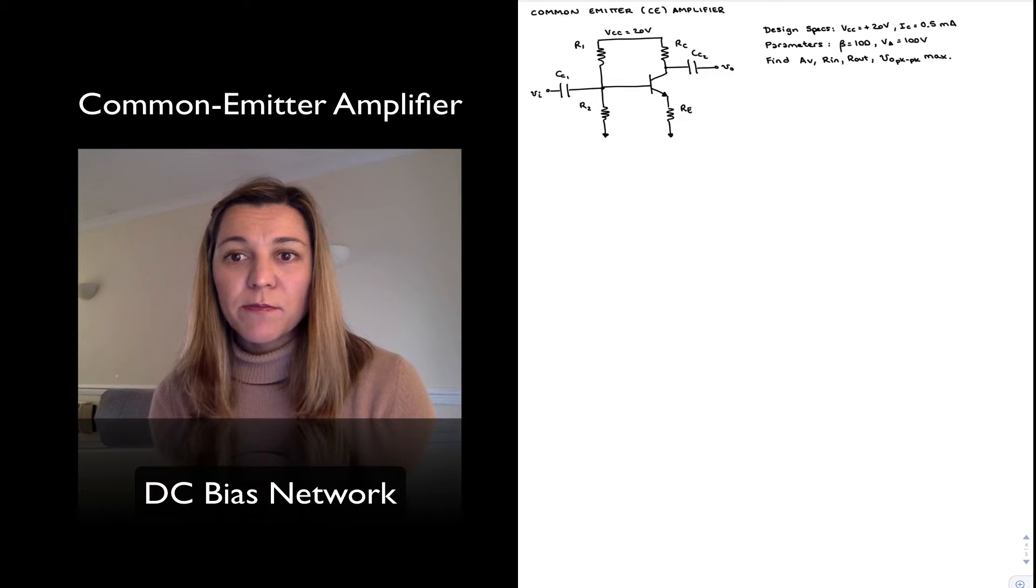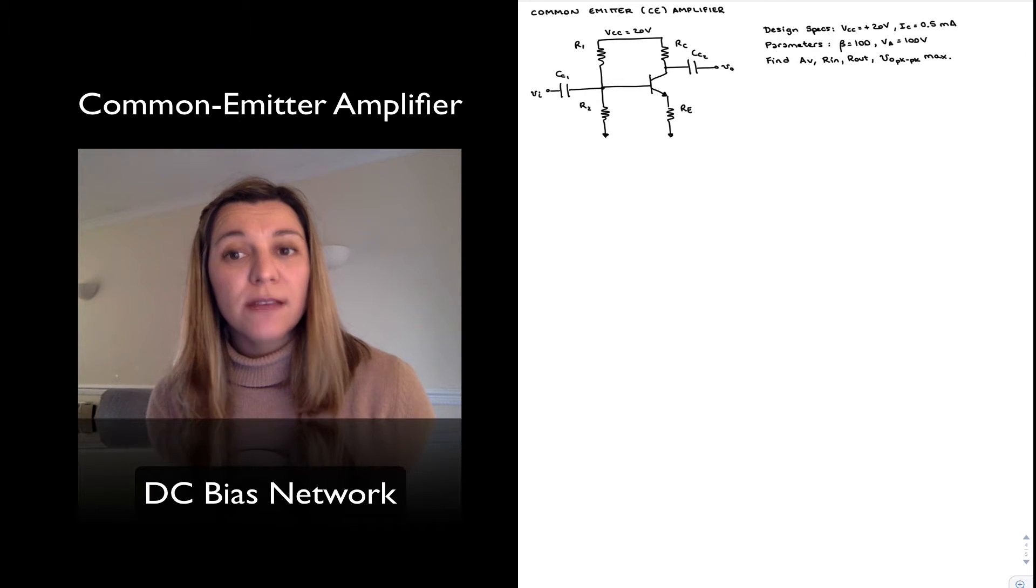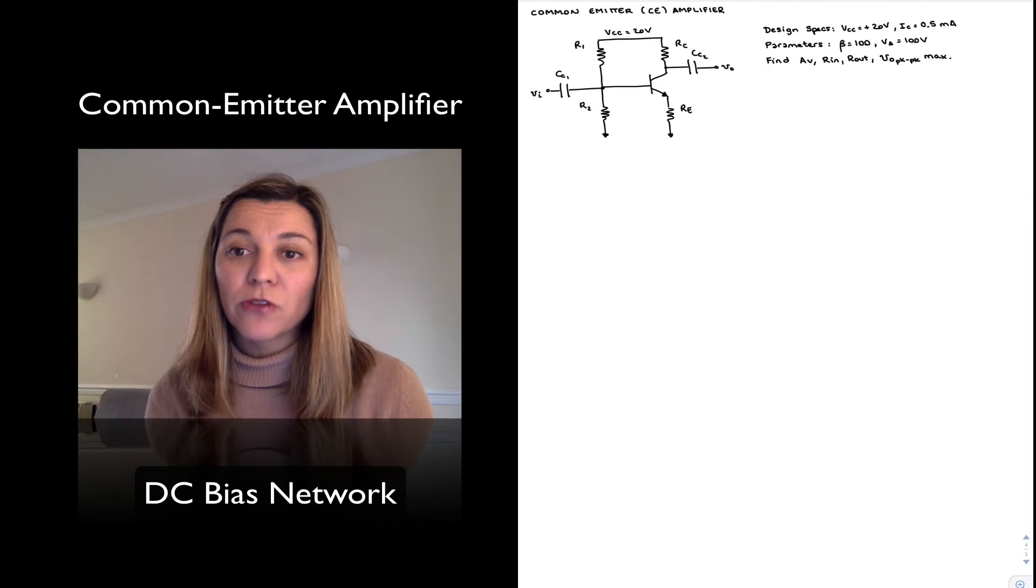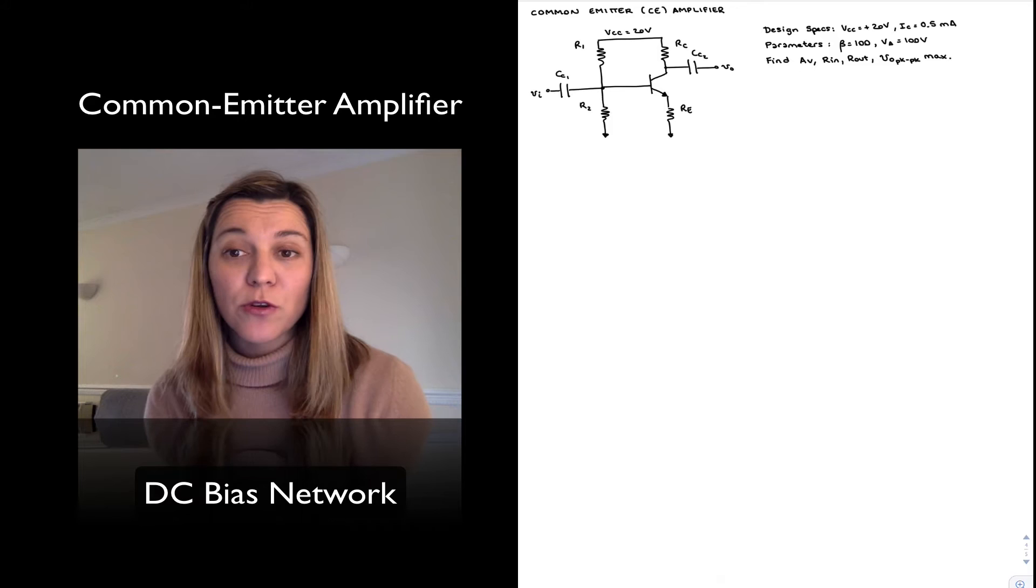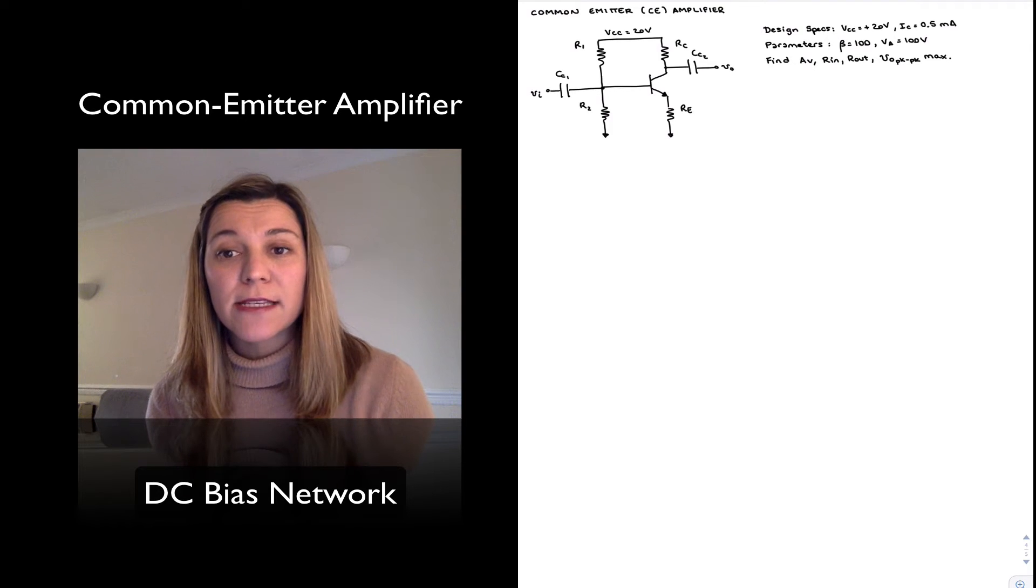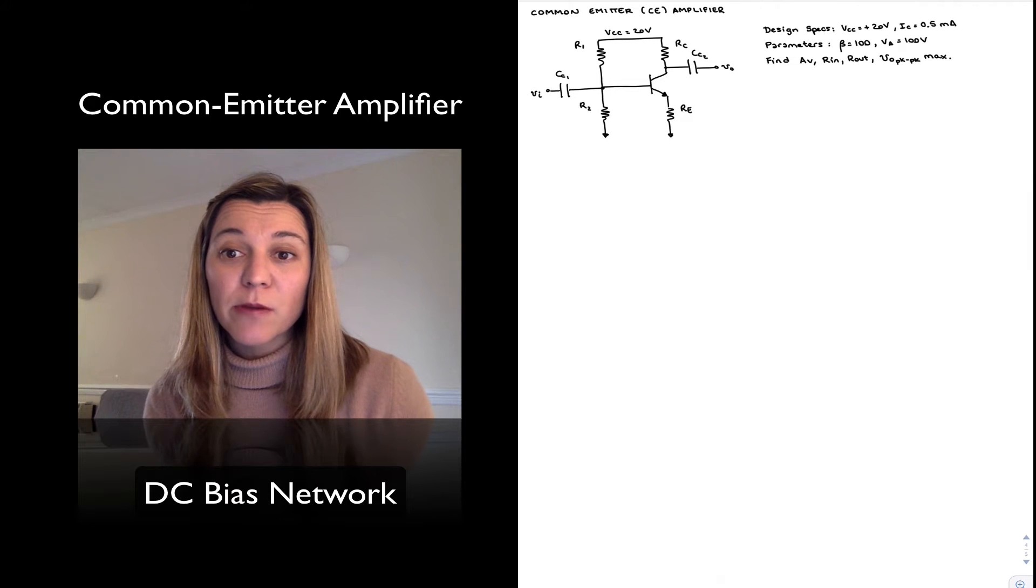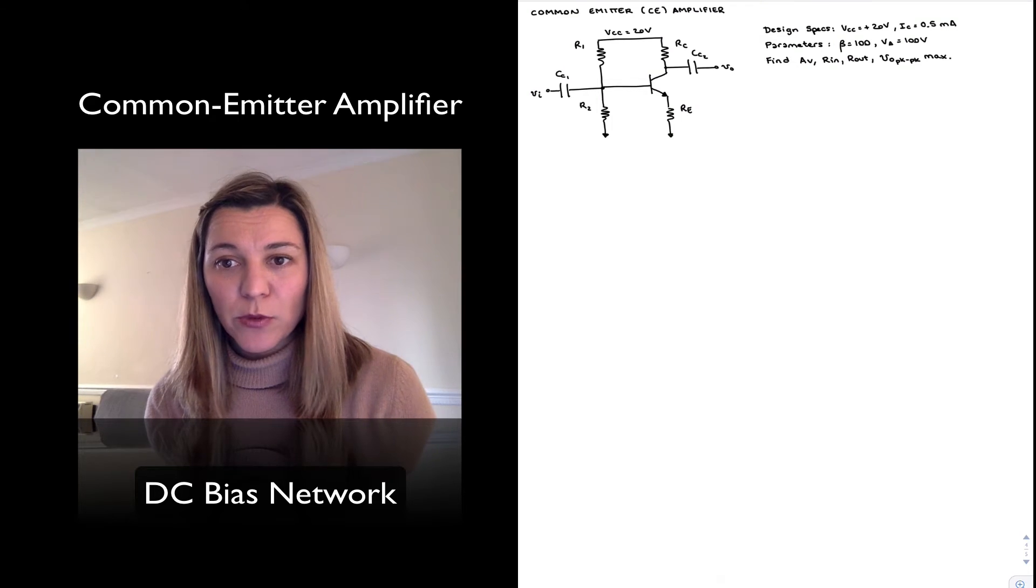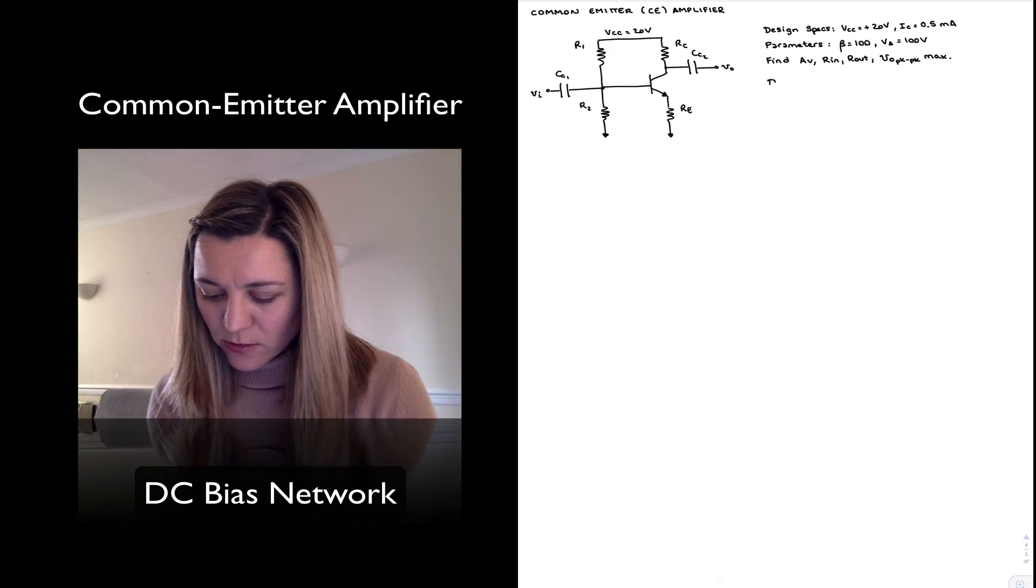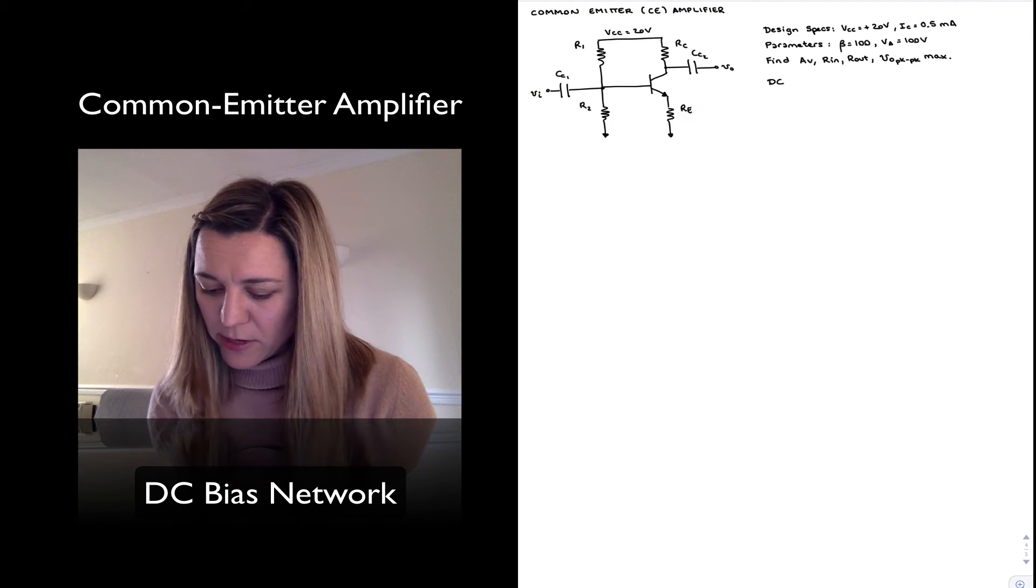So we mentioned that whenever we are doing design or analysis of transistor amplifier circuits we're going to split the exercise into the DC Q point component and the AC small signal component. First we're going to look at the circuit and analyze the DC operating point, or in this case it's a design problem, so design the circuit to have the correct DC bias point that we want. DC biasing.